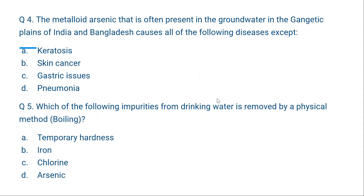Question 4: The metalloid arsenic, often present in groundwater in the Gangetic plains of India and Bangladesh, causes all of the following except? Keratosis — yes. Skin cancer — yes. Gastric issues — yes, arsenic in its mildest form can cause gastric issues. Pneumonia — that is not correct. So the answer is pneumonia, which arsenic does not cause.